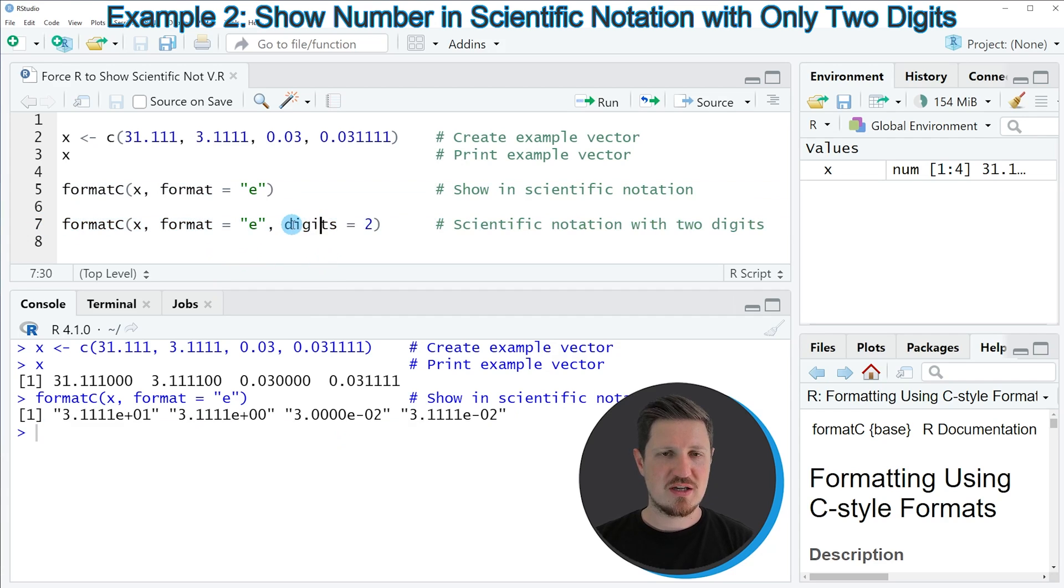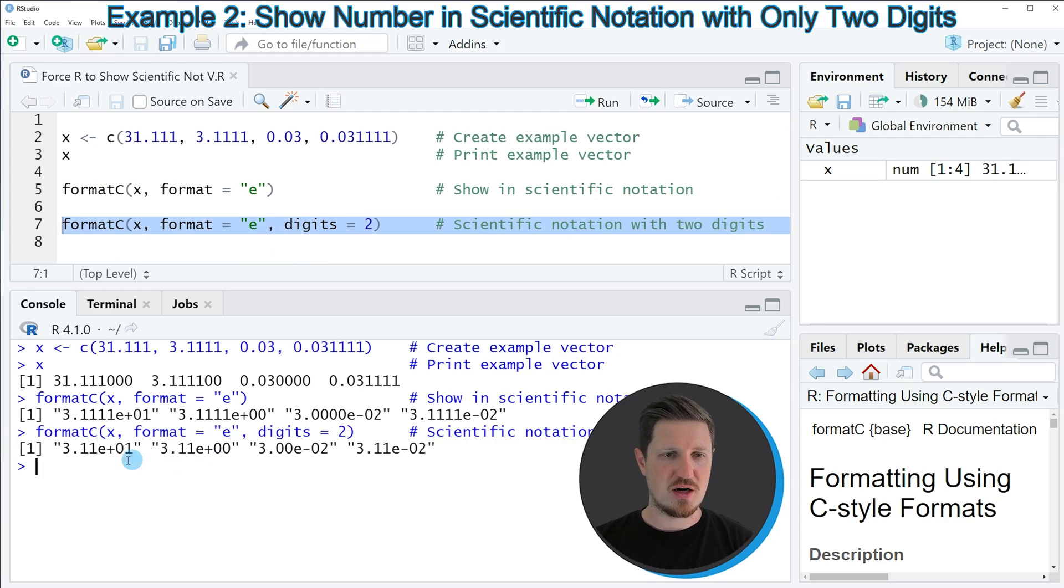So in this case, I want to specify that I want to show a scientific notation with two digits. So if you run line 7 of the code, you can see another output at the bottom in the RStudio console. And as you can see this time, our scientific notation is shown with only two digits.